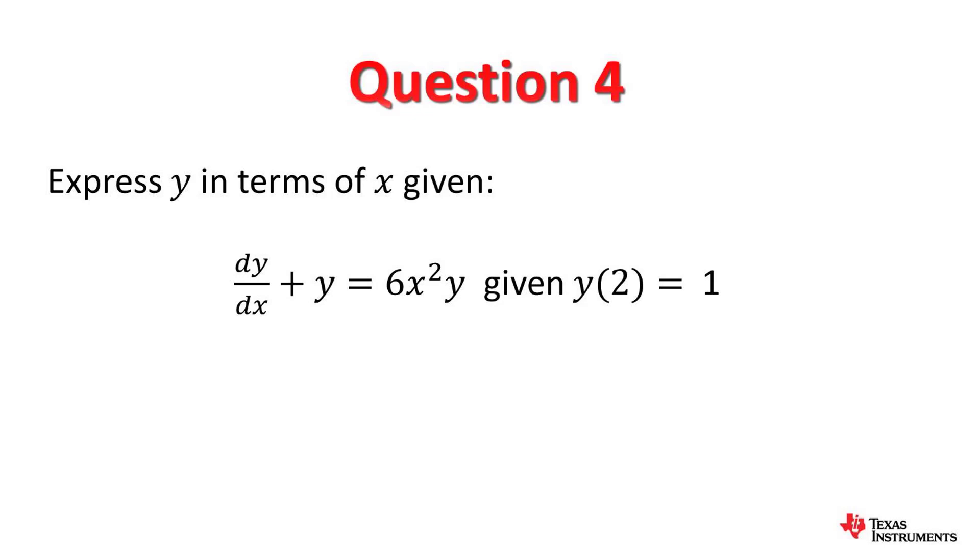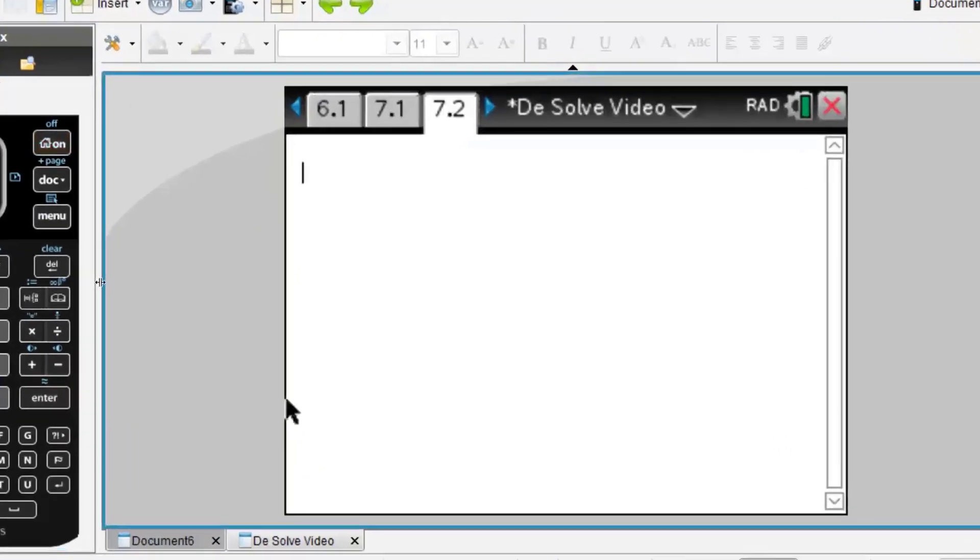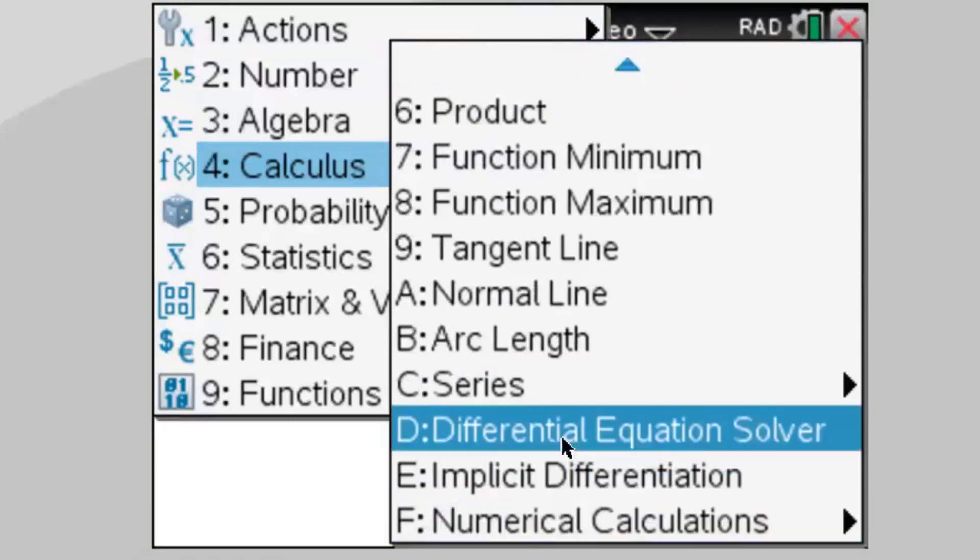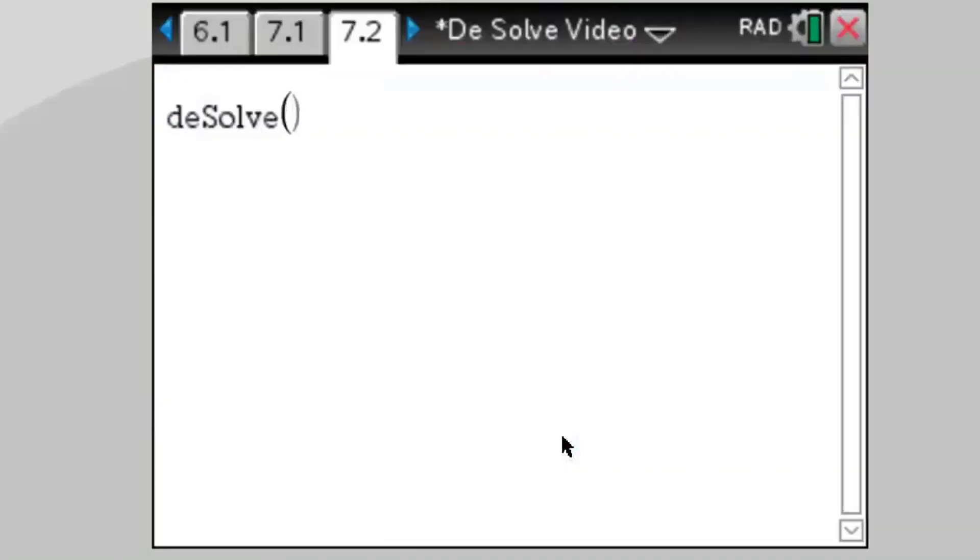Okay, so let's solve the differential equation y' + y equals 6x² times y with y of 2 equals 1. Once again on a calculator page, press menu, calculus, option number D, differential equation solver. Notice that the differential equation doesn't have to be in a particular form. It doesn't have to be dy/dx equals. It can be just y' + y equals 6x² times y. If we had to do this one by hand, it is variable separable. We have an initial condition.